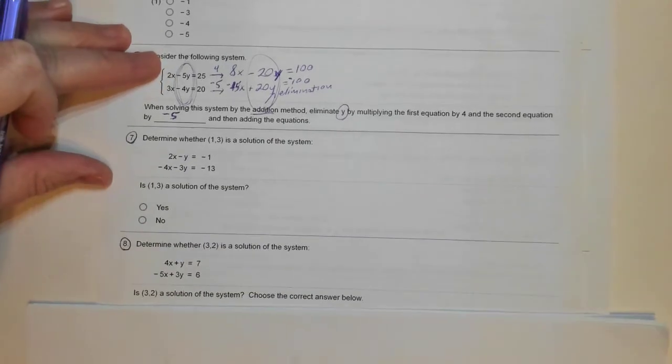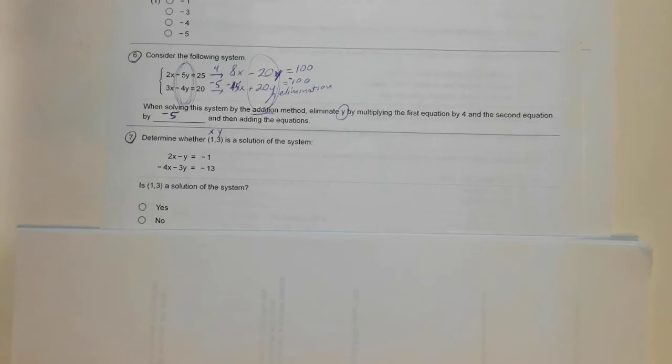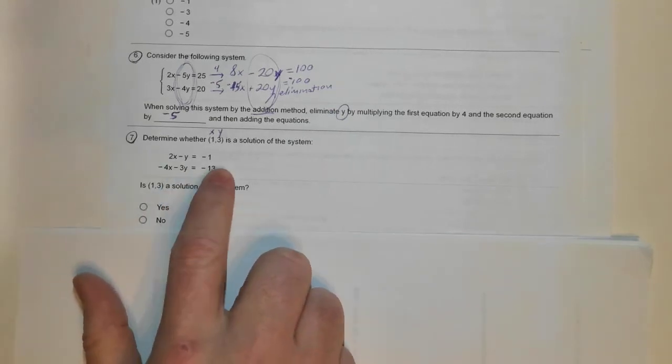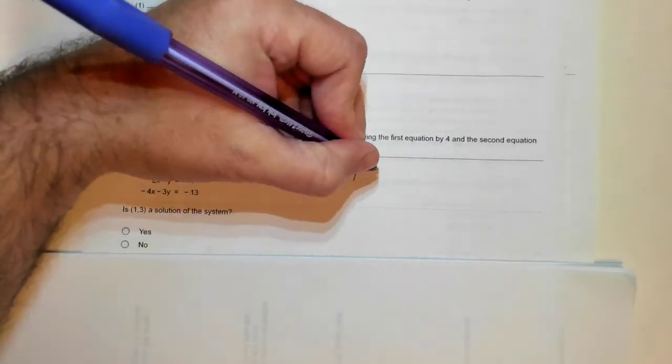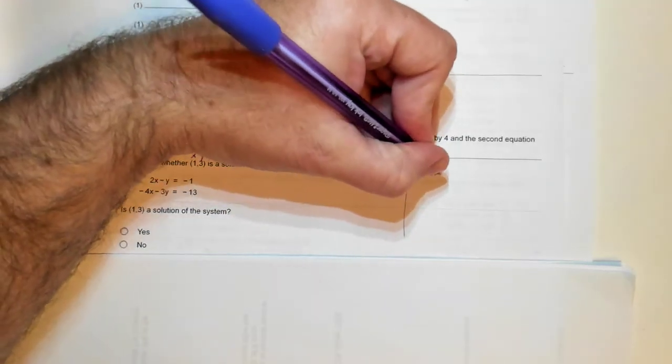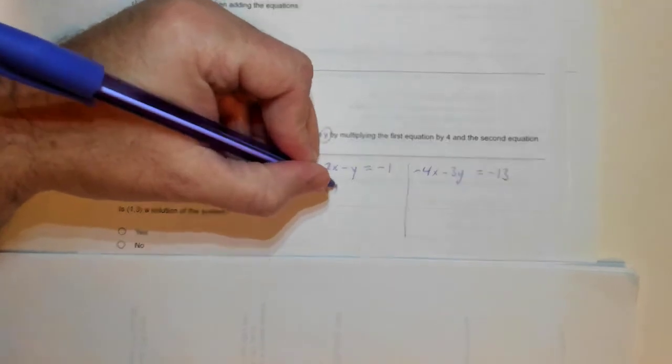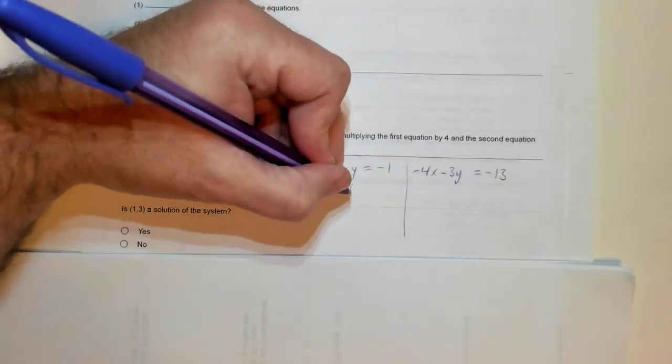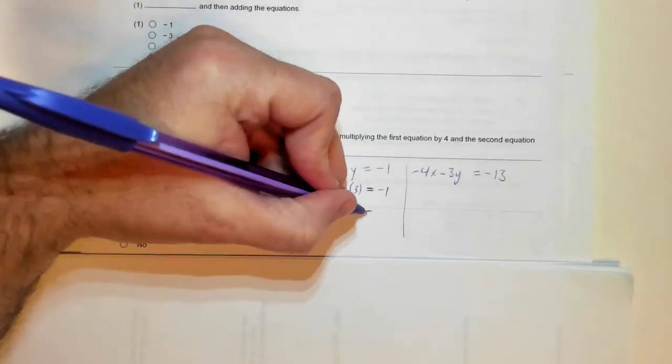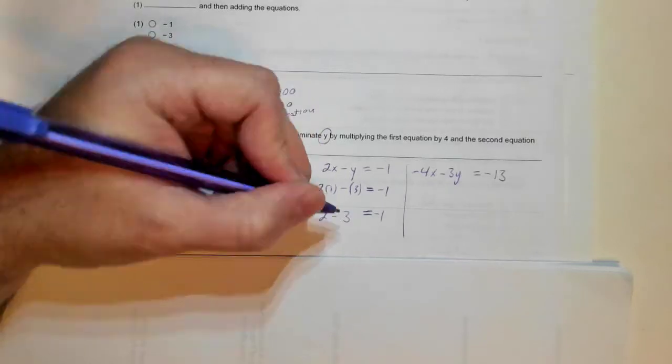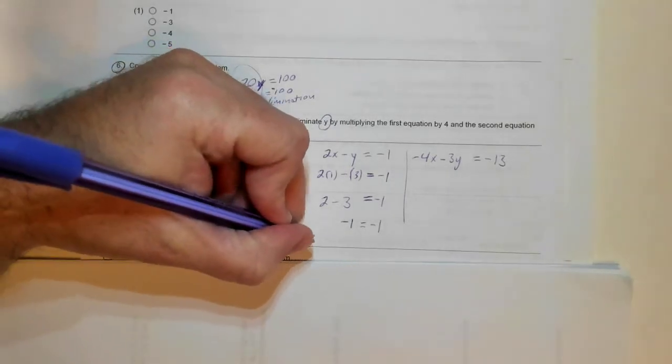Number 7 and 8 ask us: are the following coordinates solutions? So that means I'm going to plug 1 in for X and 3 in for Y and see if the equations are true. 2X minus Y equals minus 1. Minus 4X minus 3Y is minus 13. So I'm going to plug X equals 1 and Y equals 3. I want to see if I get a negative 1 on the left side. So 2 minus 3 is in fact negative 1. Minus 1 equals minus 1 is true.